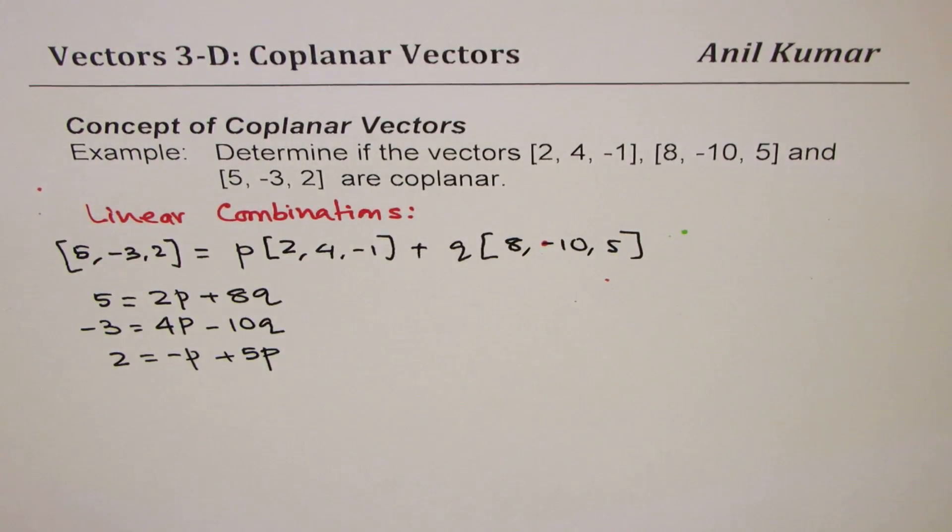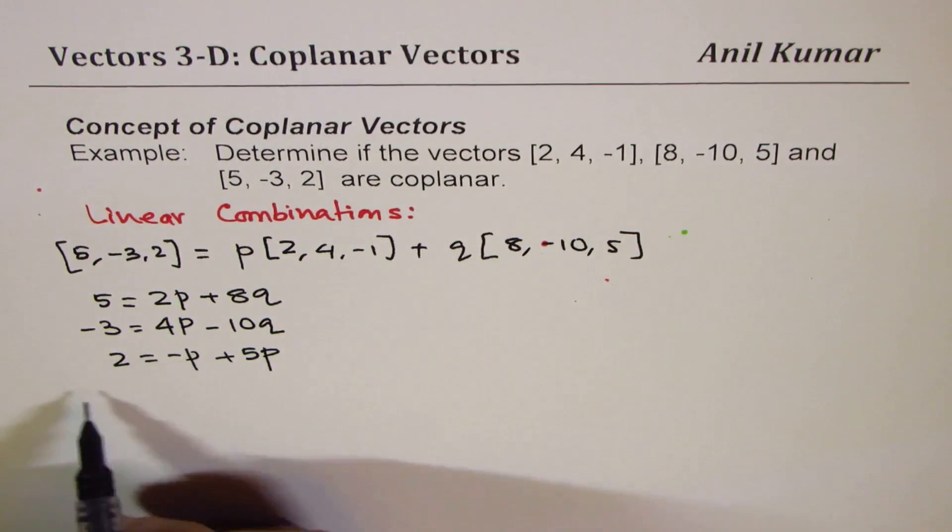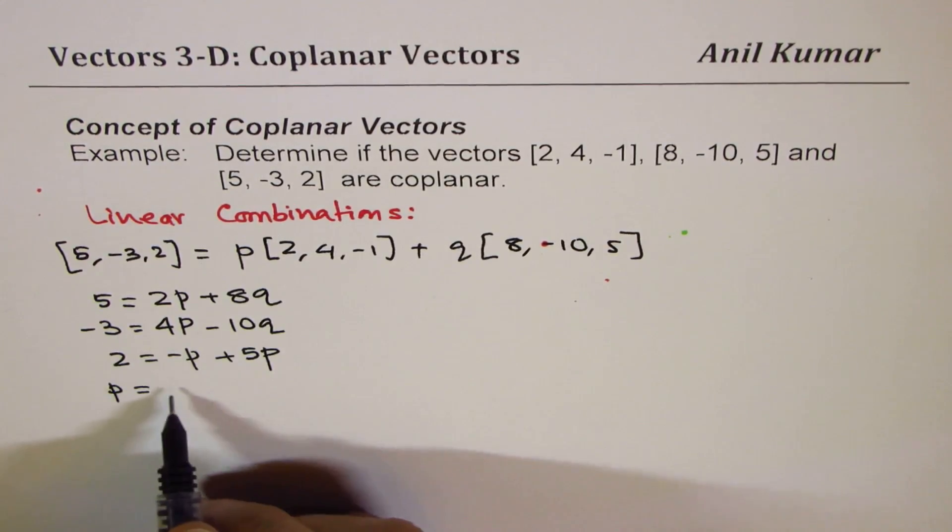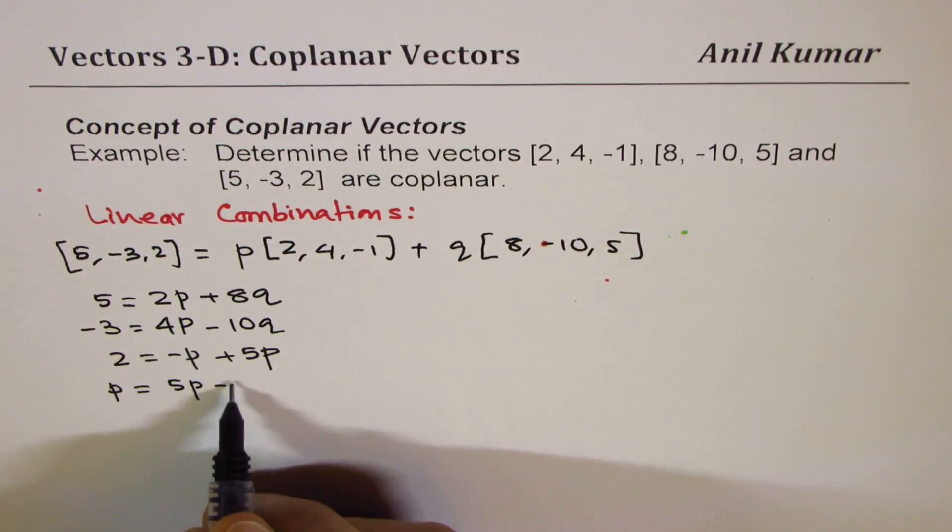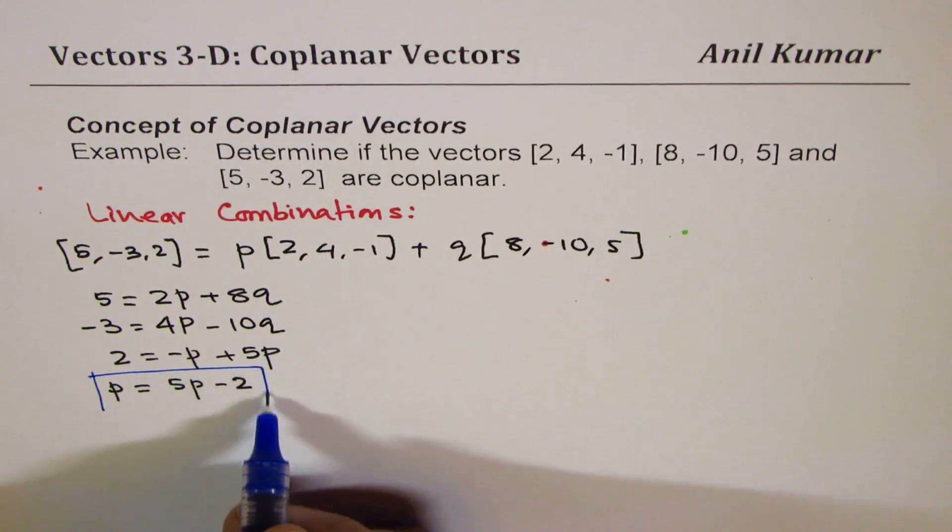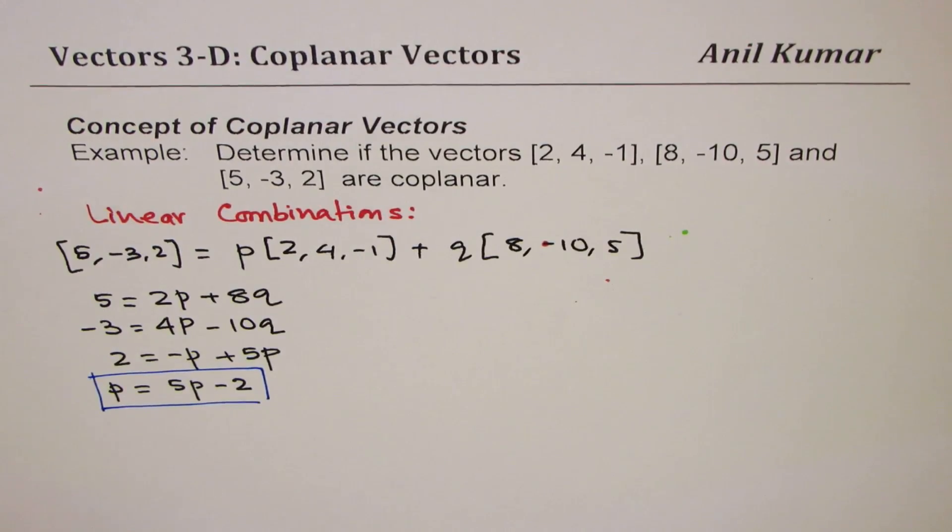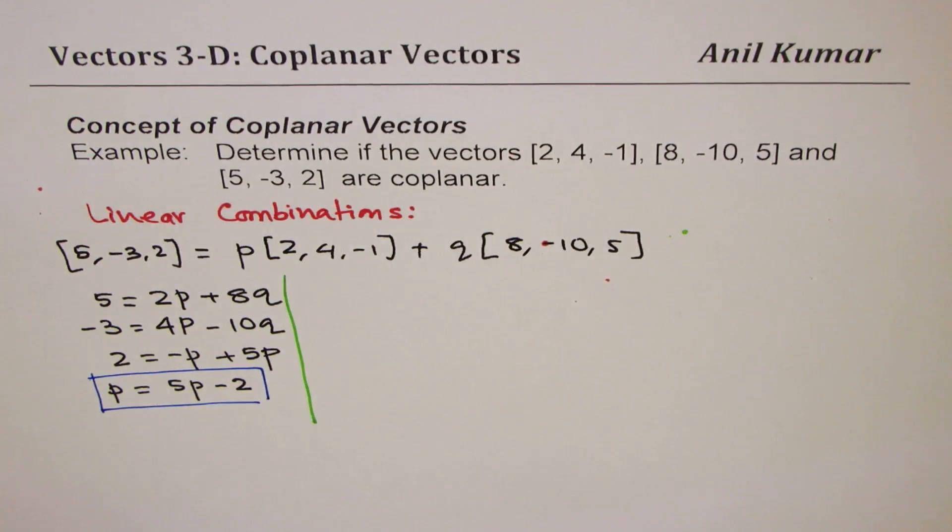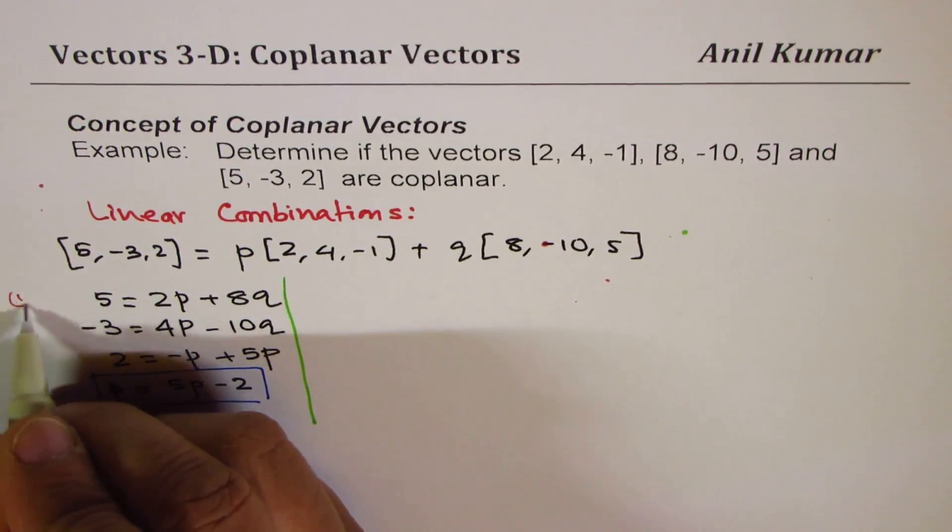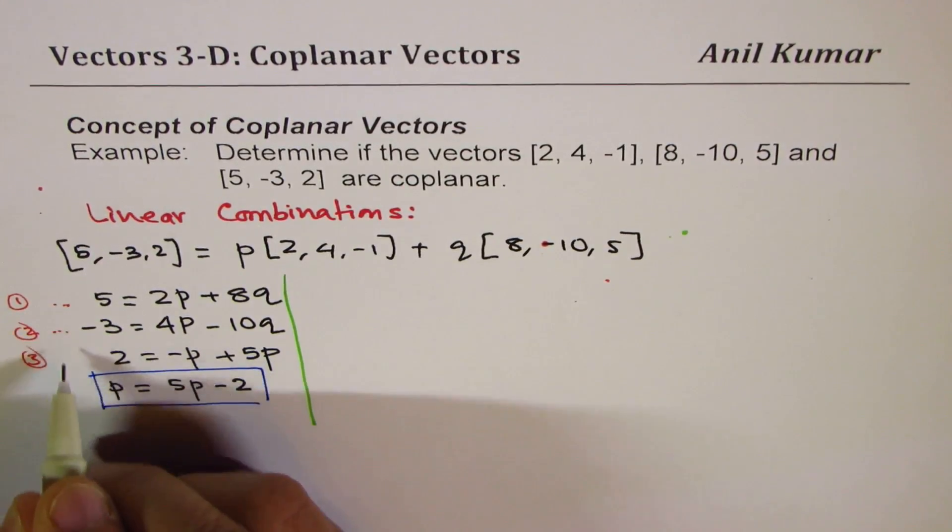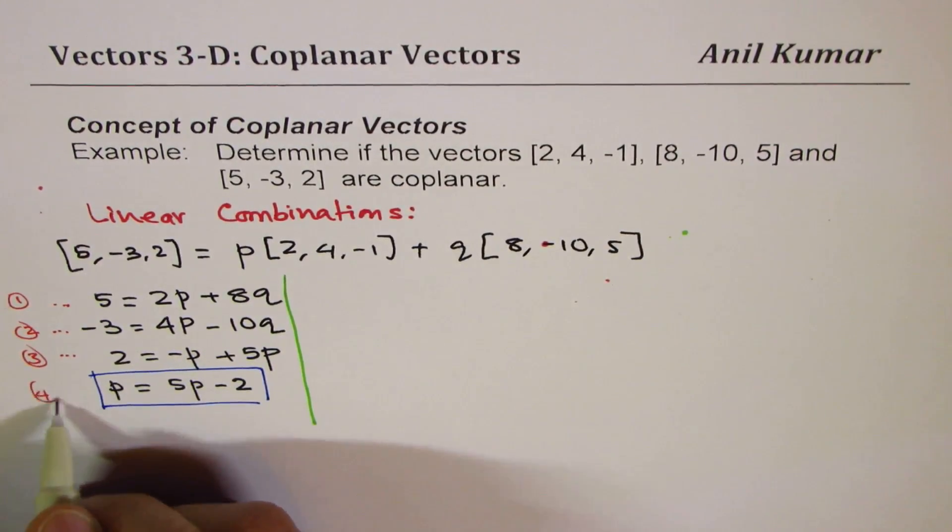Now, from the last equation, I could write P as equal to, if I bring P this side, it is 5Q minus 2. So I have related one in terms of the other. P equals to 5Q minus 2. So I could substitute in one of our equations. Let me call these equations as equation 1, 2 and 3. And this is my equation 4.